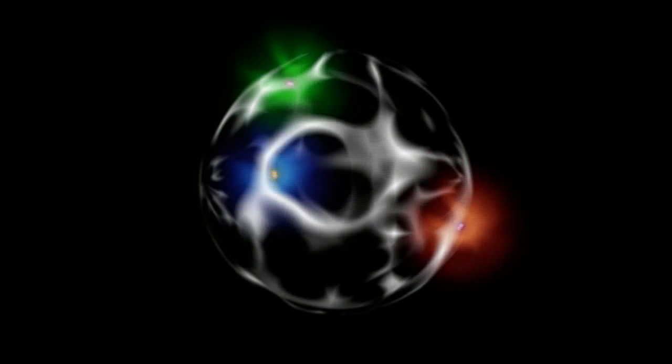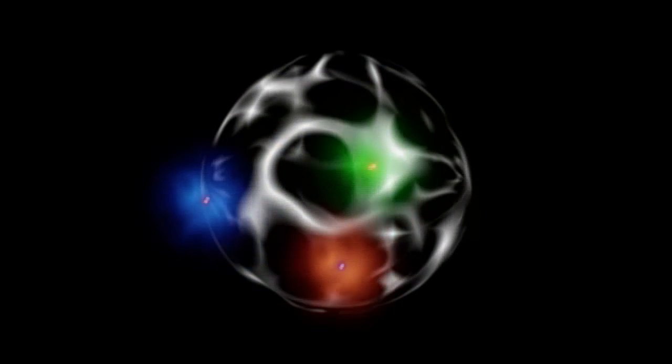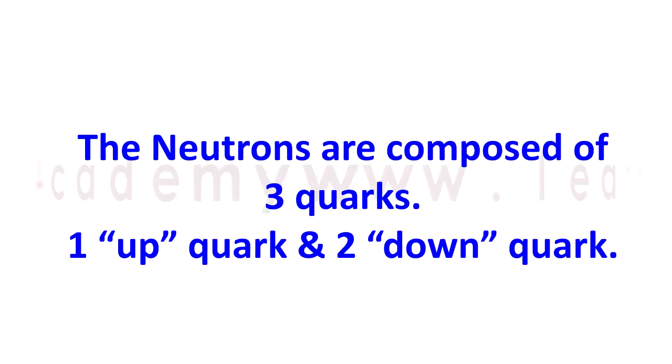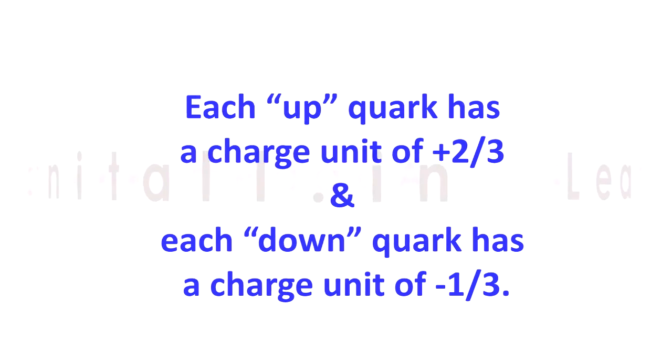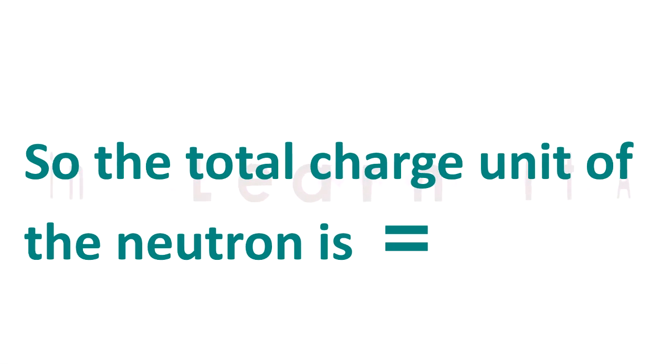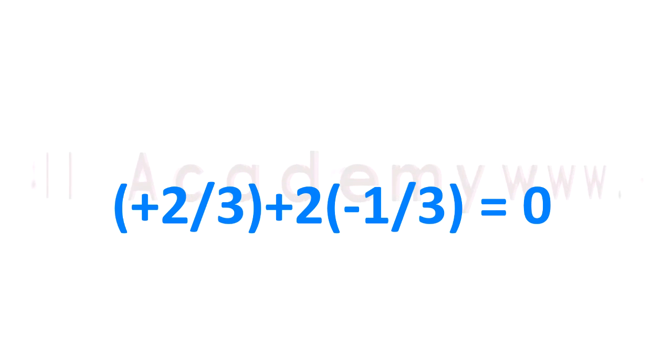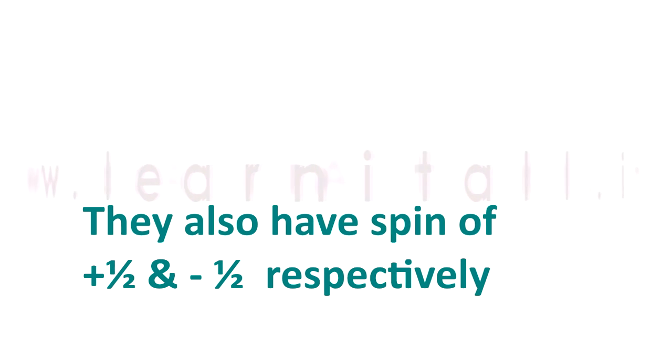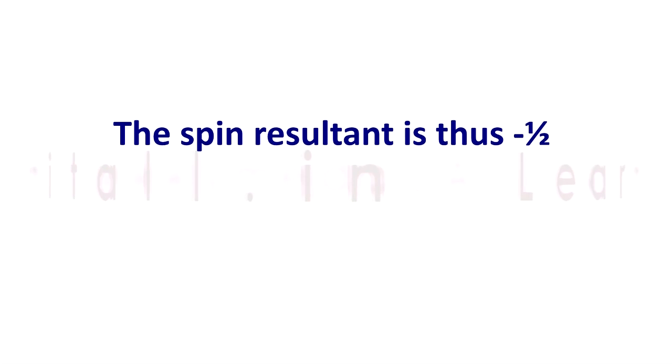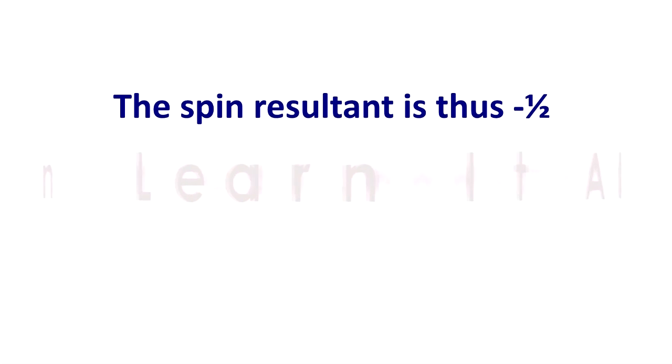The neutrons are composed of three quarks. Among them, one is up quark and two are down quarks. Each up quark has a charge unit of plus 2/3, and each down quark has a charge unit of minus 1/3. So the total charge unit of the neutron is zero. They also have spin of plus 1/2 and minus 1/2 respectively. The spin resultant is thus minus 1/2.